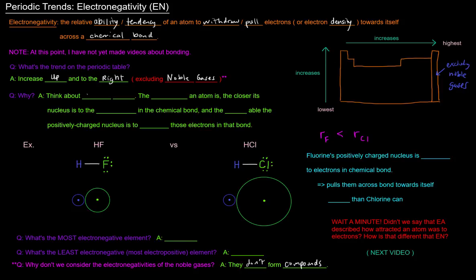Well, let's think about atomic size. The smaller an atom is, the closer its nucleus is to the electrons in the chemical bond. And the more able the positively charged nucleus is to attract those electrons in that bond.